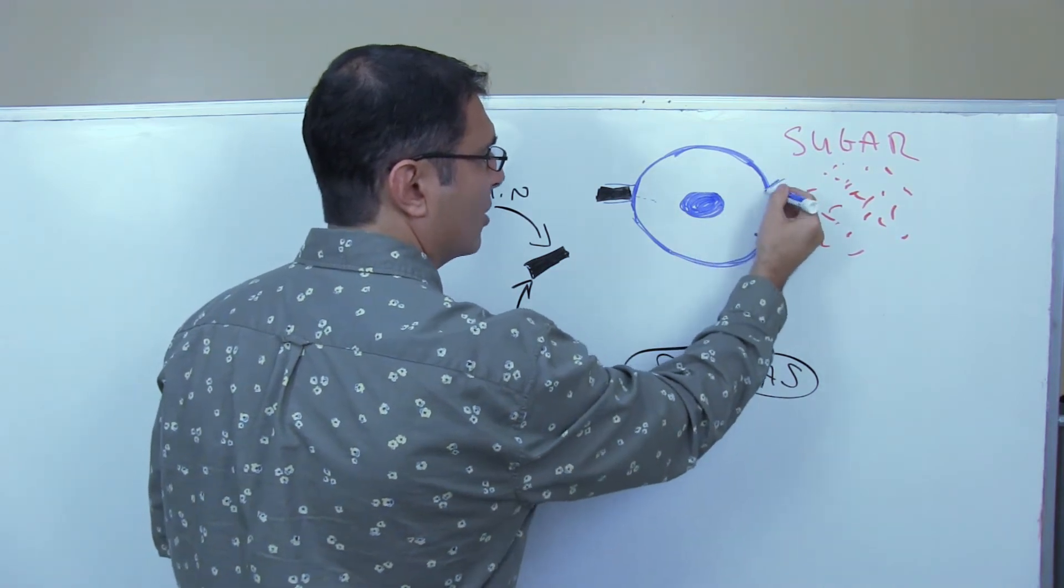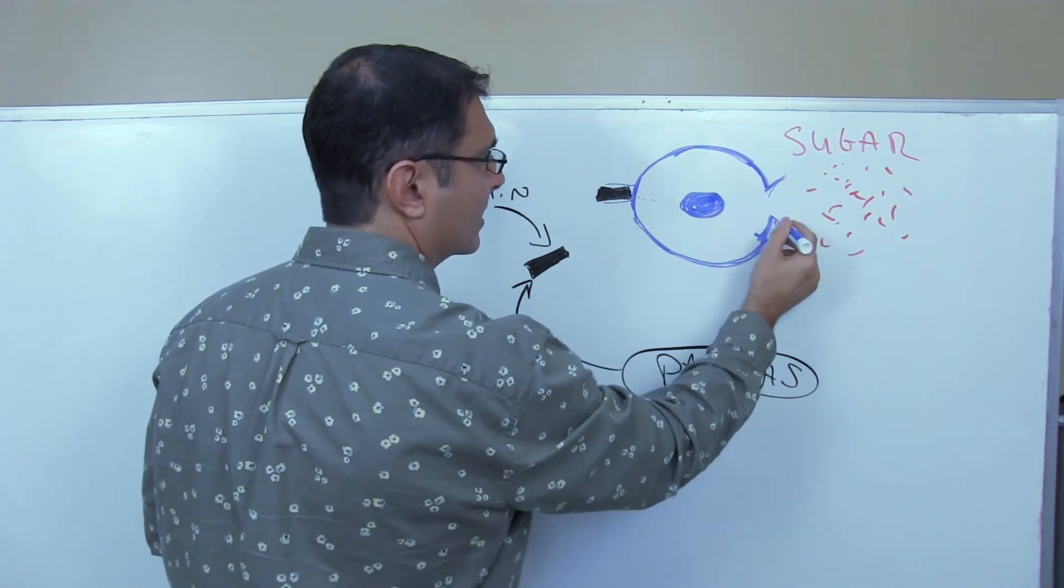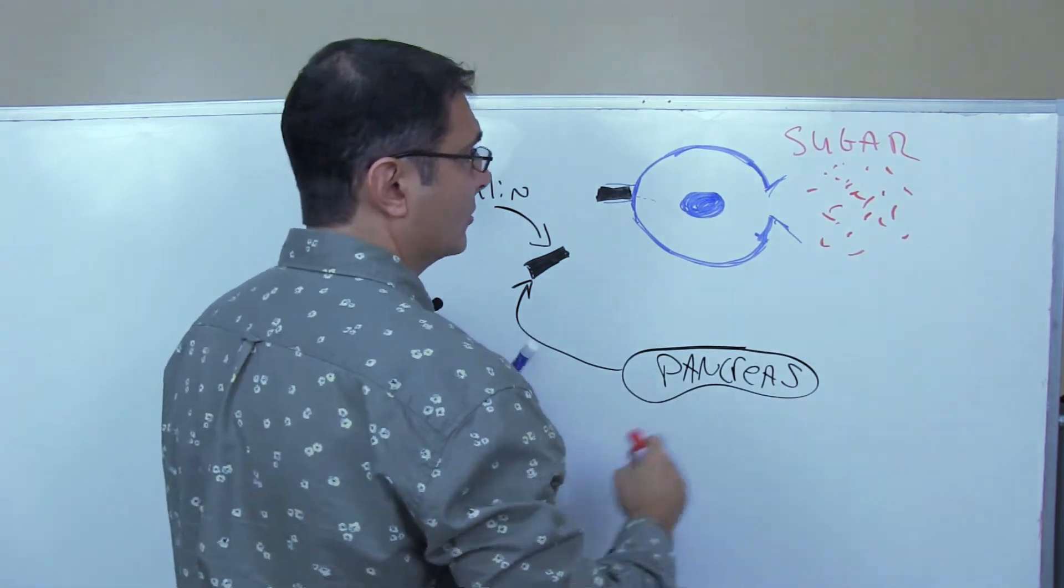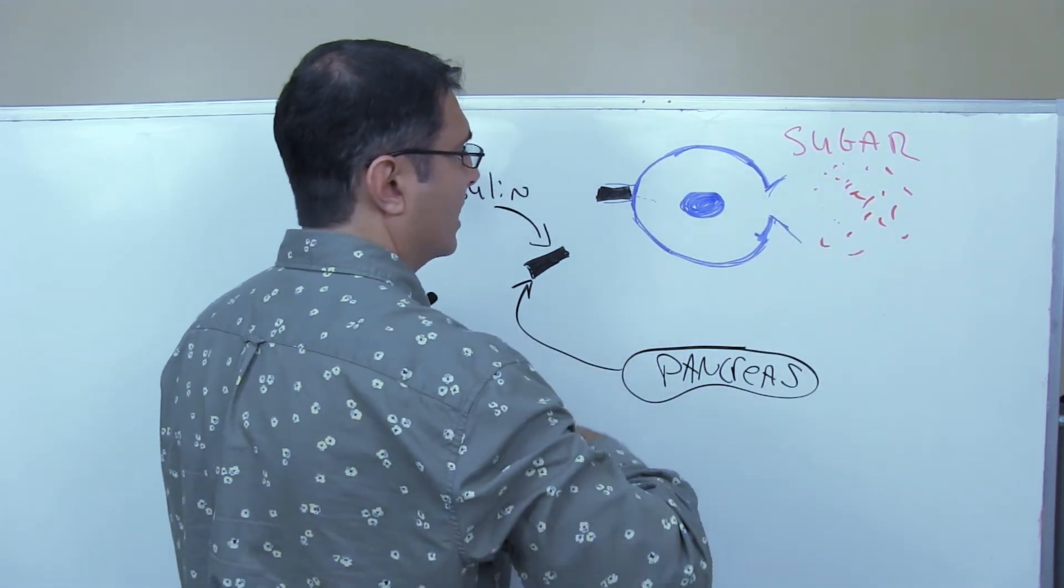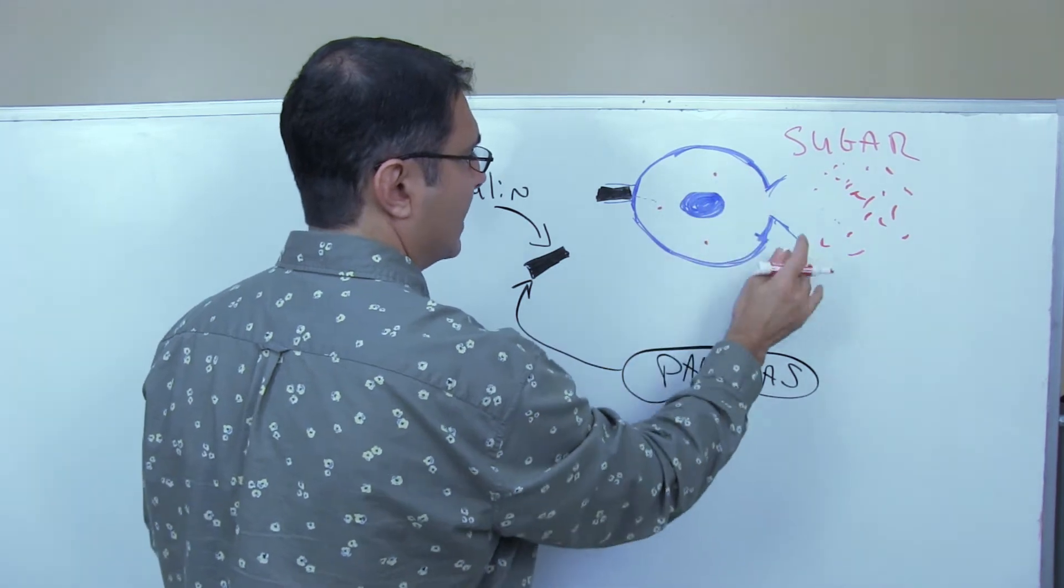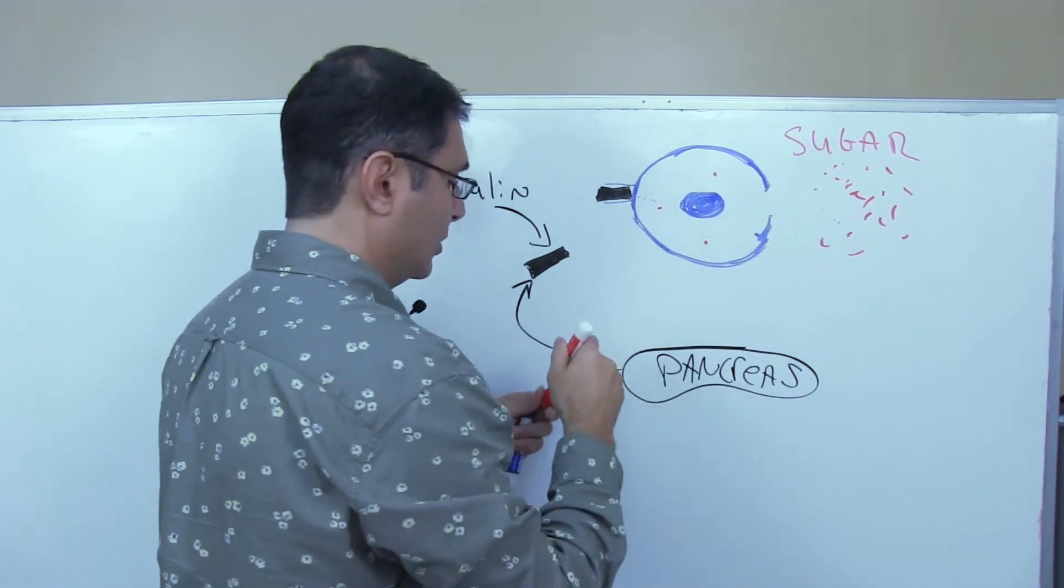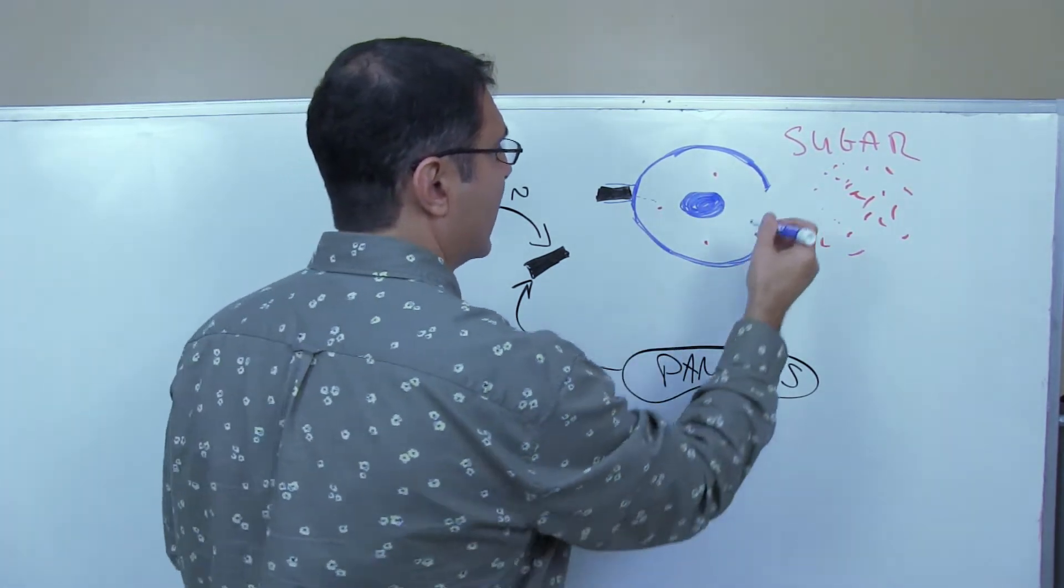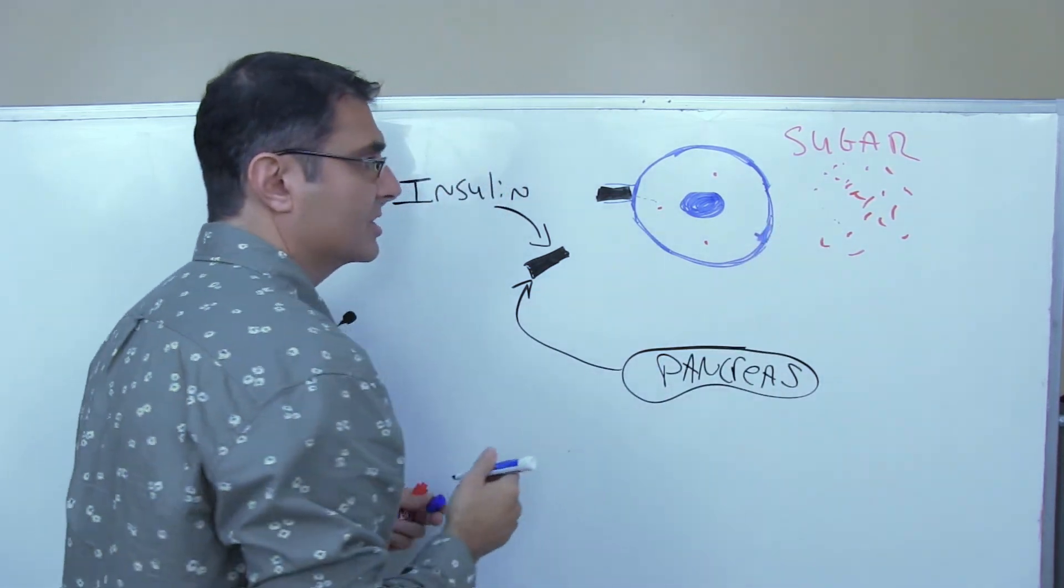And as a result, the cell only opens up just a little bit compared to a lot. And as a result of that, the sugar is only reduced from the blood a tiny bit. So what happens now is the blood sugar stays high. The blood sugar stays high.